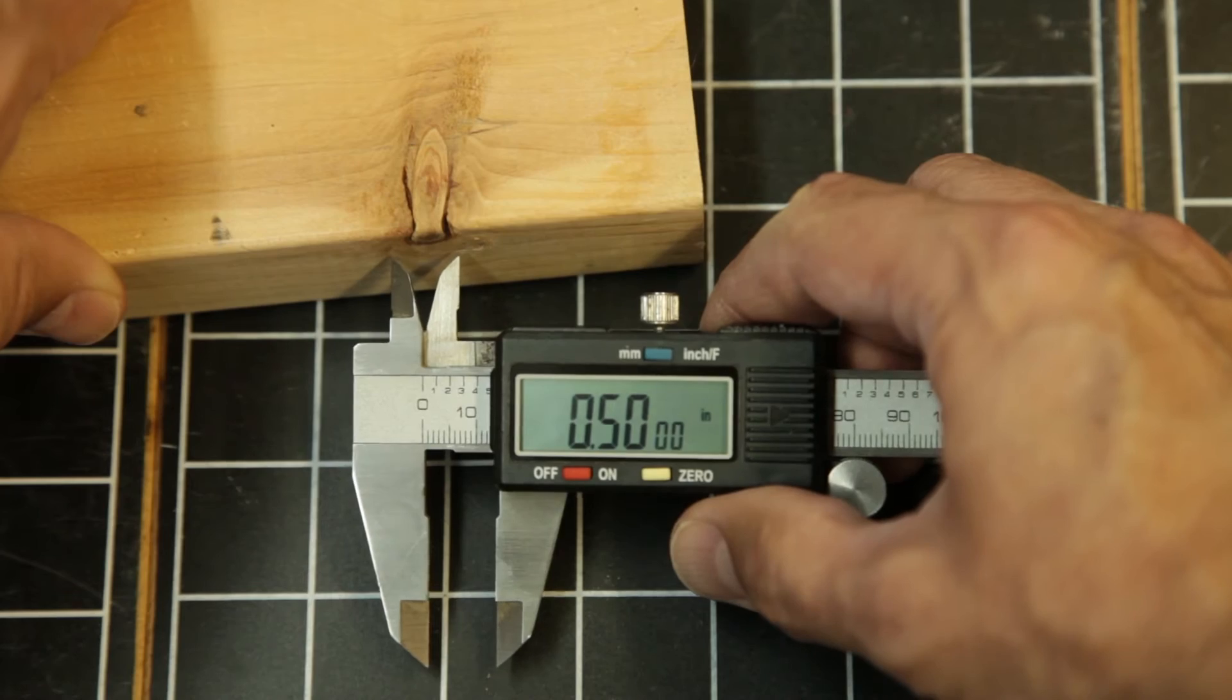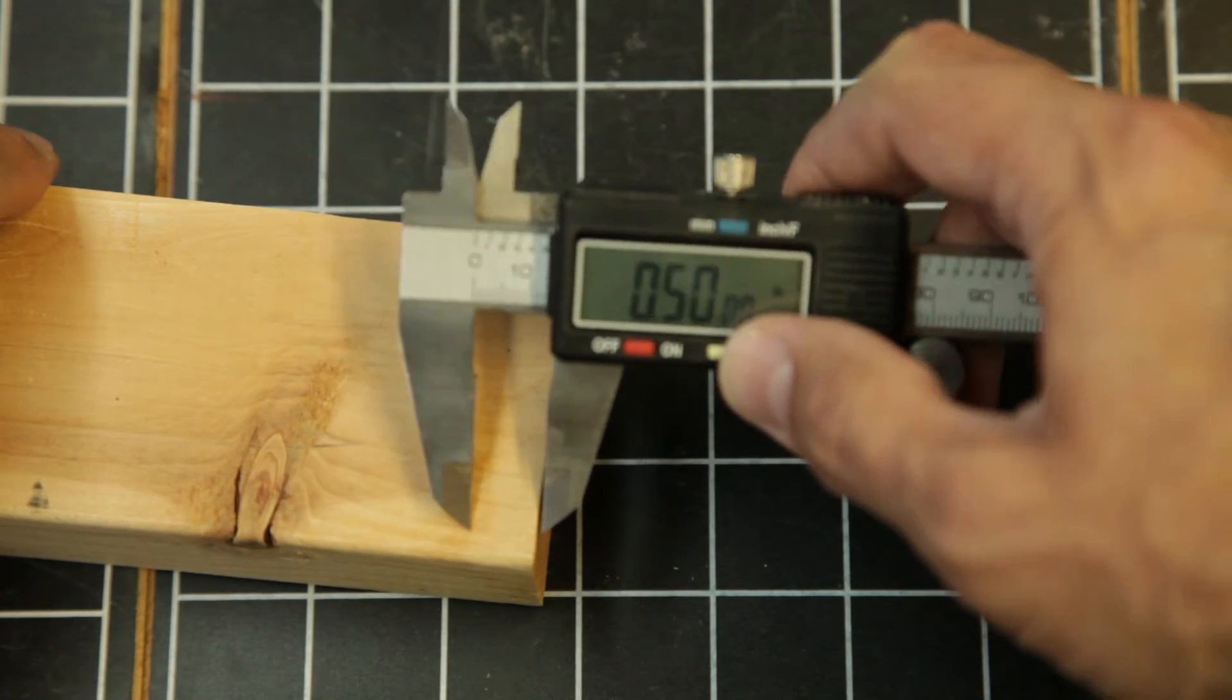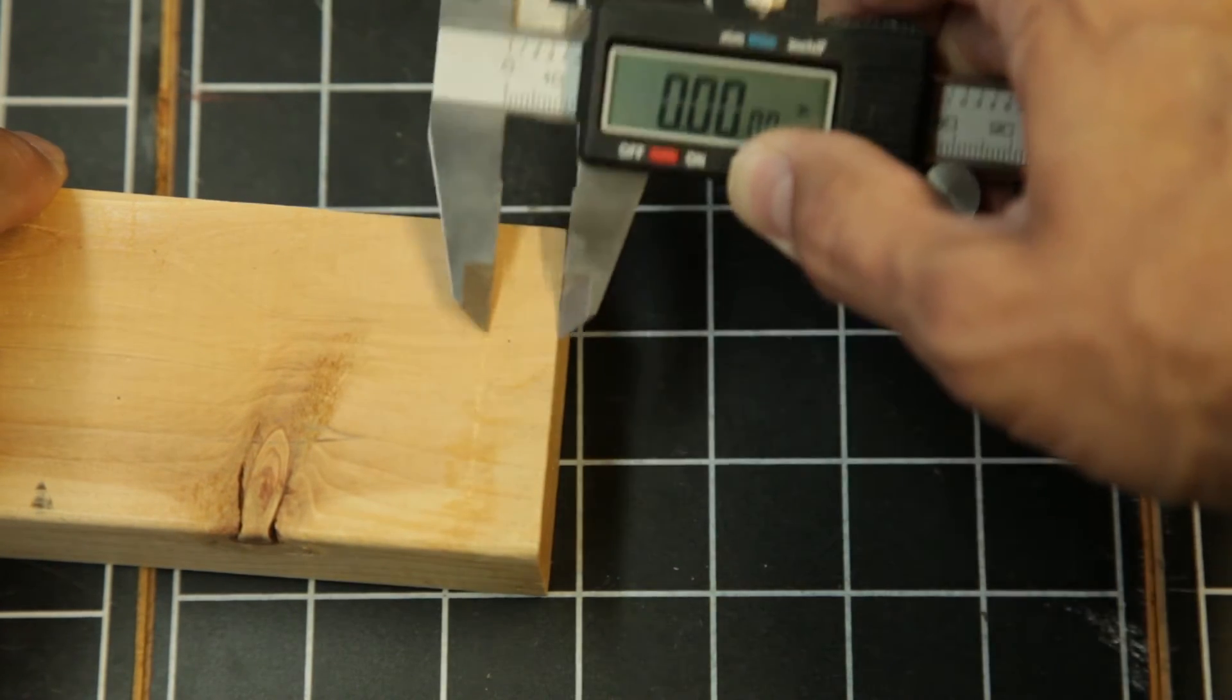And it's also good for transferring distances. You can use the ends, they're sharp, so you can kind of scribe a little bit. You can measure one thing and then use it to scribe.